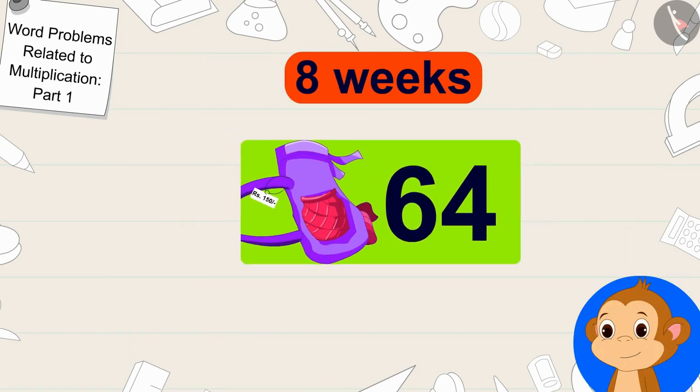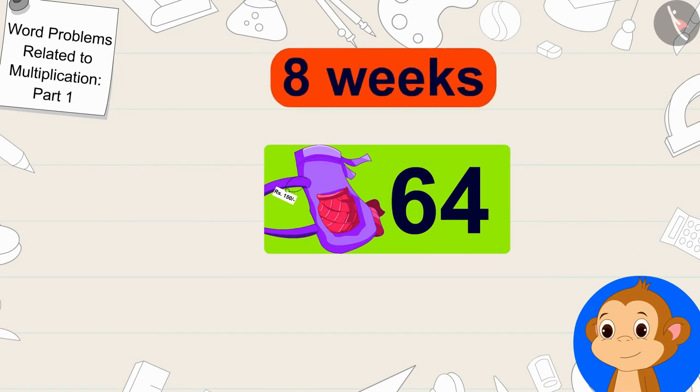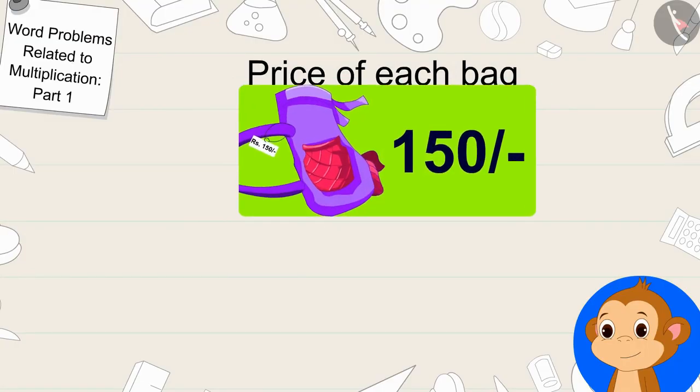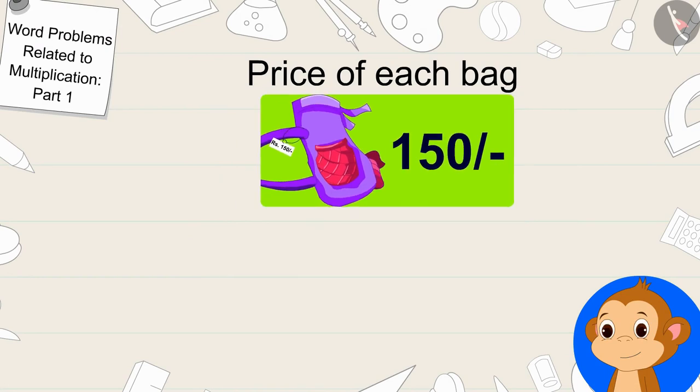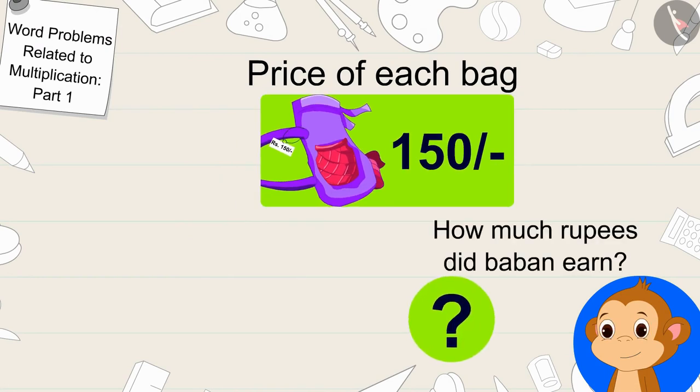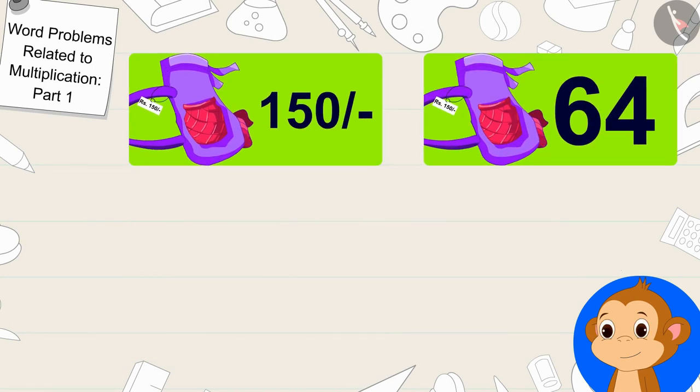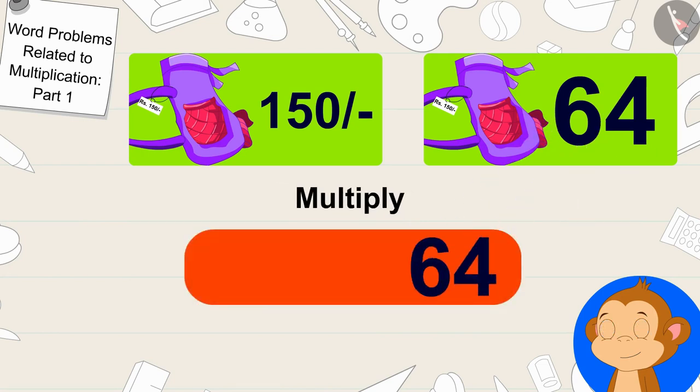Babban will sell 64 bags in eight weeks. Babban sells each bag for 150 rupees. To find out how many rupees Babban earned by selling 64 bags, we only have to multiply 64 bags by 150 rupees.